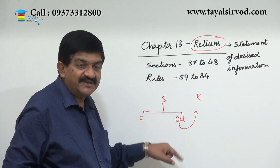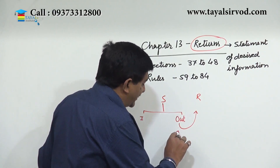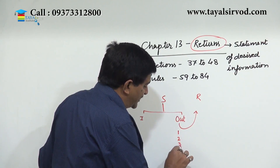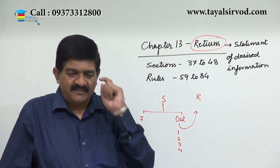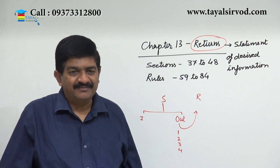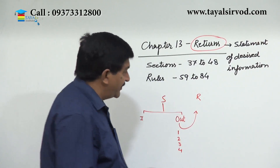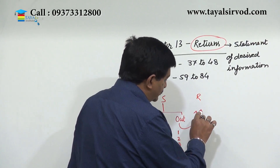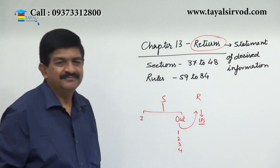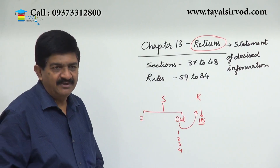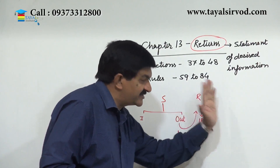When the output supply details are given, this person is giving intimation to the government that he has made supply number one, two, three, four to the recipient. There can be a number of recipients. The government then asks the recipient to give information about his input supplies. The supplier has declared supplies one, two, three, four to this recipient.